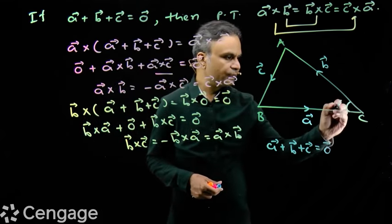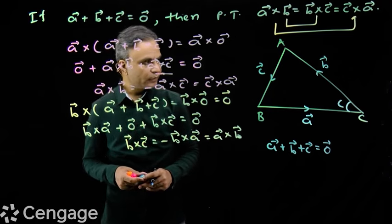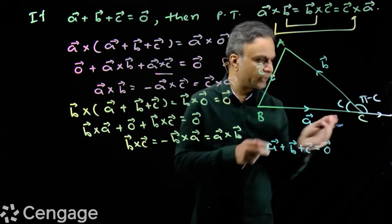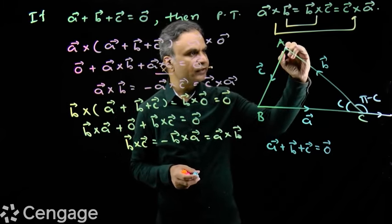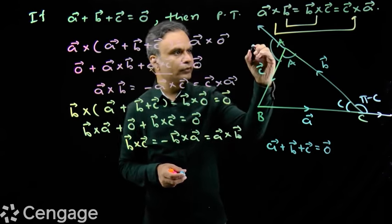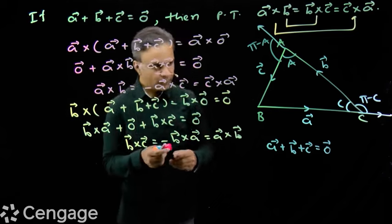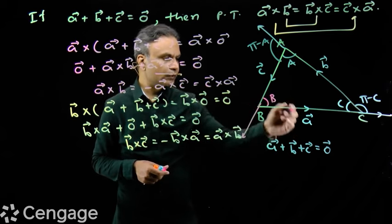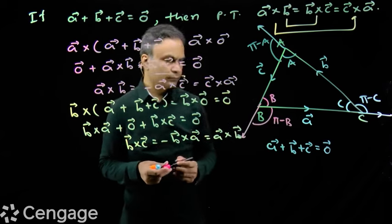If this angle of the triangle is C, then the angle between vectors a and b will be pi minus C. Similarly, the angle between vectors b and c will be pi minus A (extending the vector). And the angle between vectors a and c will be pi minus B.